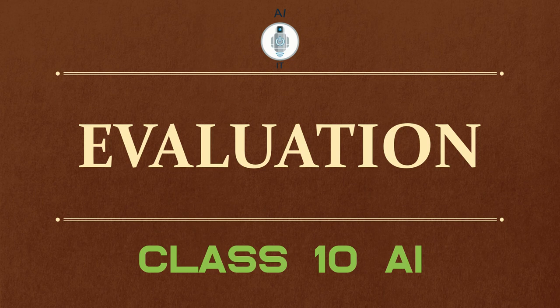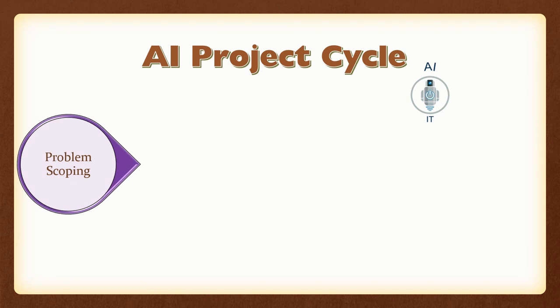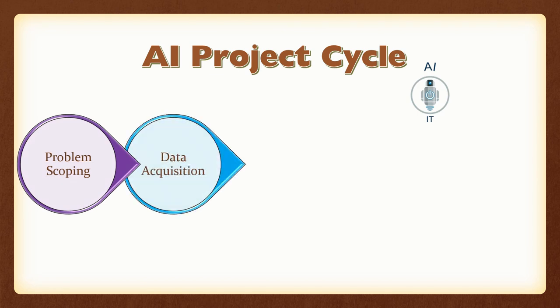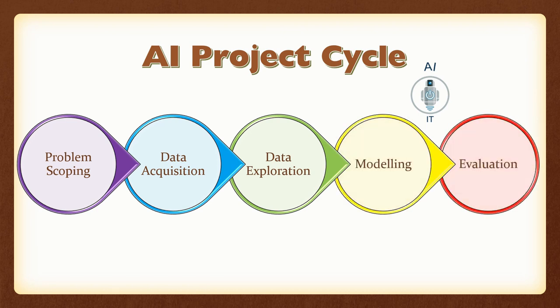In this session let us understand evaluation. Till now we have learnt the four stages of AI project cycle: problem scoping, data acquisition, data exploration, and modeling. Now we will be covering the fifth stage, that is the evaluation stage.